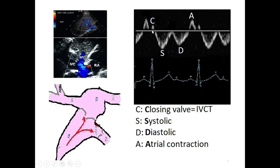Because the probe is positioned superiorly, blood moving toward the transducer produces a positive deflection corresponding with the QRS on EKG. This small positive deflection is called the C wave, corresponding to tricuspid valve closure. At this moment both the tricuspid and pulmonary valves are closed, so it corresponds exactly with the isovolumetric contraction time (IVCT) of the right ventricle.